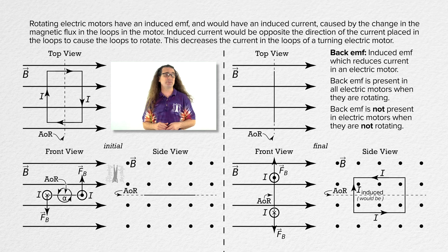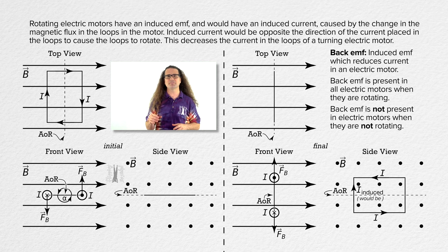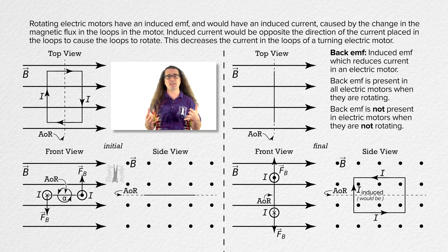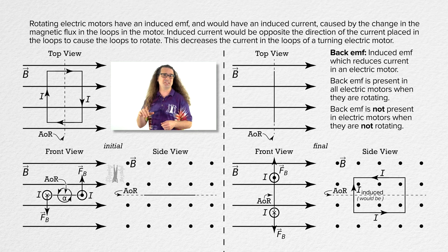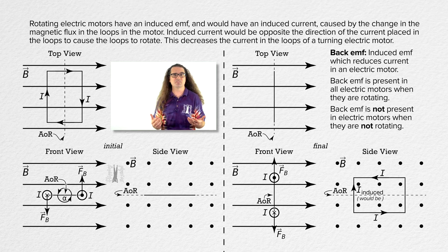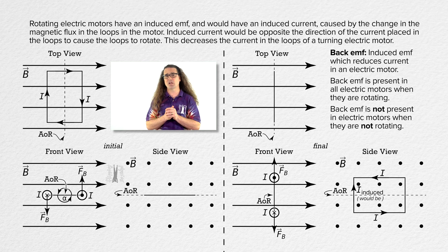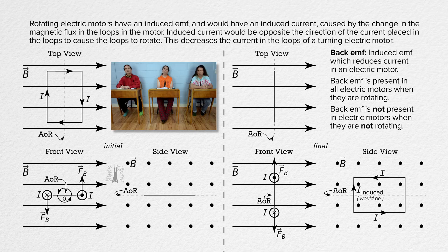This decreased back EMF also happens if something suddenly binds the electric motor causing it to stop rotating, which brings the back EMF down to zero suddenly and the current in the circuit increases suddenly. And this can trip the circuit breaker because the current in the circuit is now above the maximum current allowed through the circuit breaker.